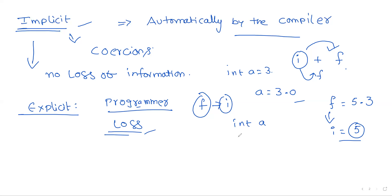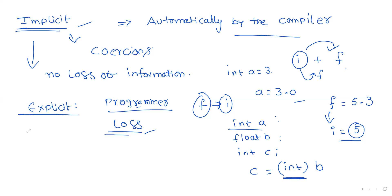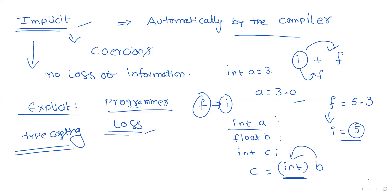For explicit conversion, we manually need some syntax. For example, given int a and float b, if you want to convert floating b into integer: c = (int)b. This is called type casting — explicit conversion where you explicitly specify the type, converting b into integer data type.